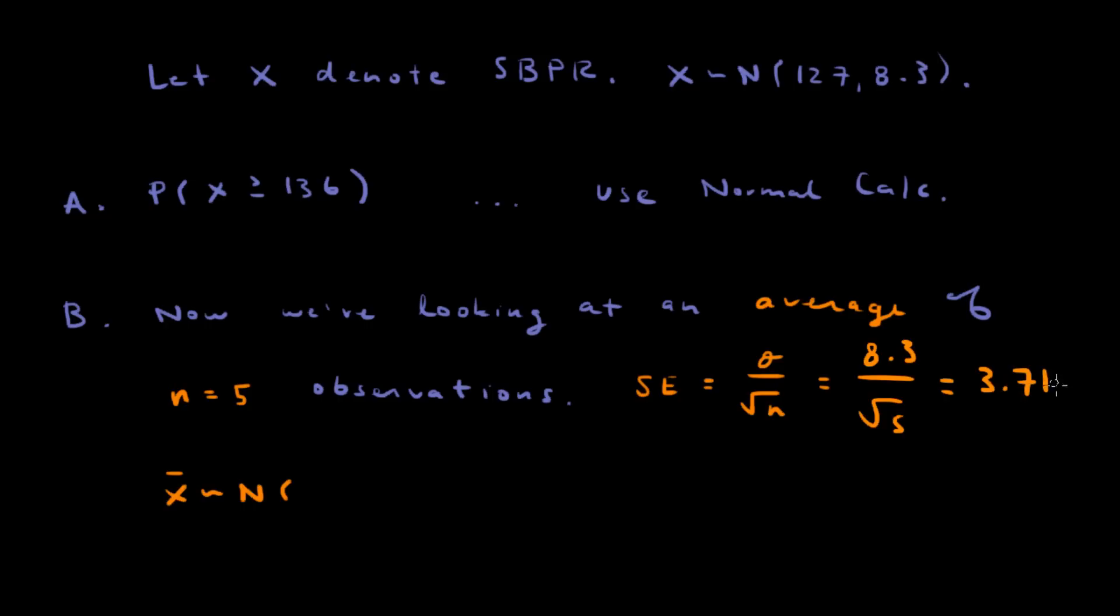So that's the standard error for this problem. Now we know that the sample mean is normally distributed with a mean of 127, and a standard error of 3.712. It's normal because the population is normal, and the mean is 127 because the population mean is 127.